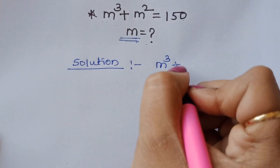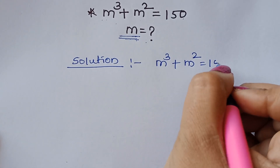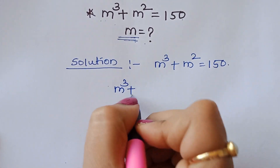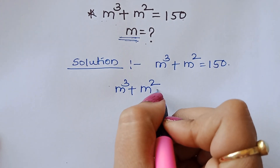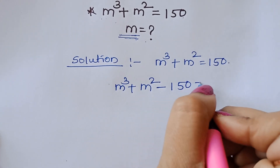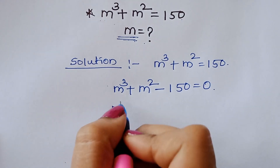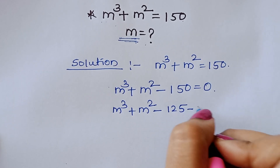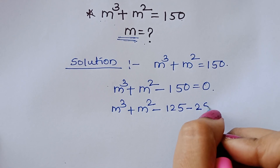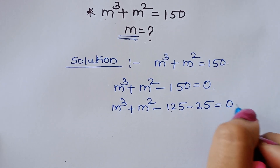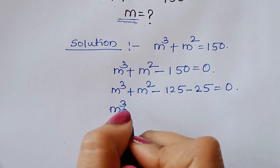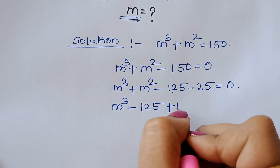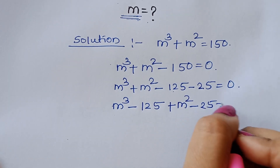m cube plus m square is equal to 150. We can write this as m cube plus m square minus 150 is equal to 0. Now we split 150 as 125 plus 25, so m cube plus m square minus 125 minus 25 is equal to 0. So we can write m cube minus 125 plus m square minus 25 is equal to 0.